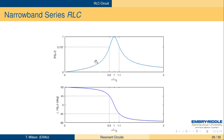Looking at an underdamped example with ζ = 0.1: the two corner frequencies are approximately ω₀ − ζω₀ and ω₀ + ζω₀, giving a bandwidth of 2ζω₀. The phase angle transitions from +45° at the lower corner frequency to −45° at the upper corner frequency, passing through 0° at ω₀.